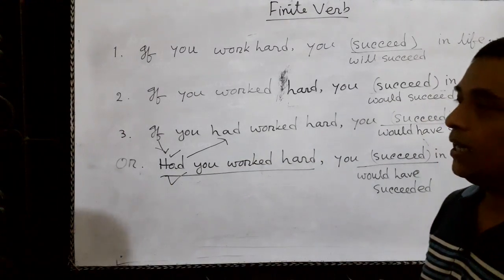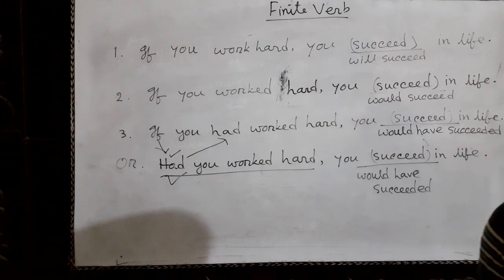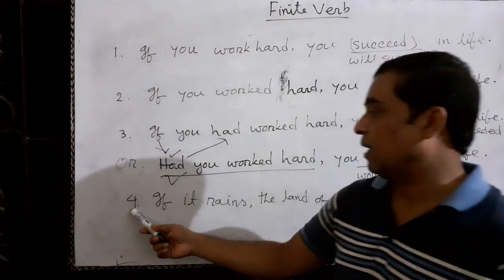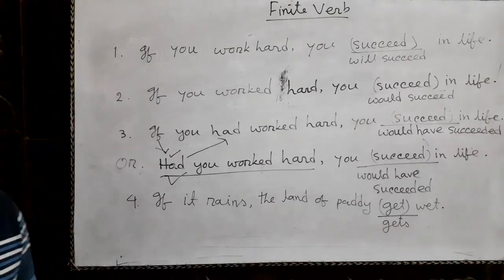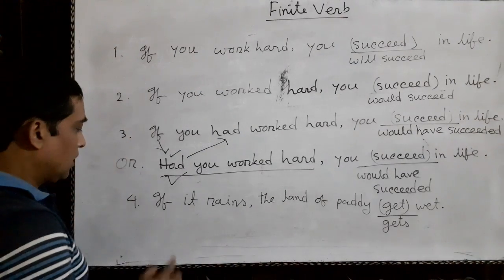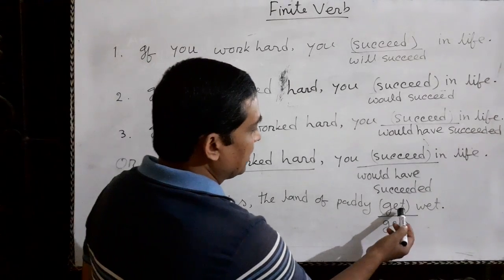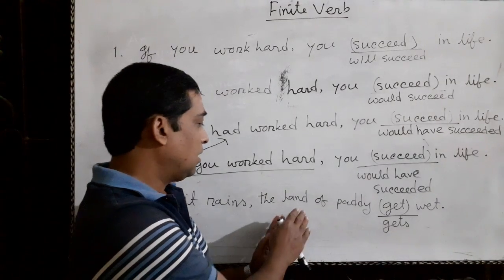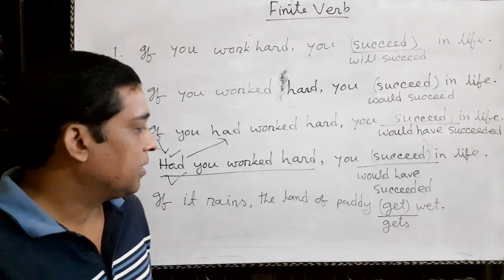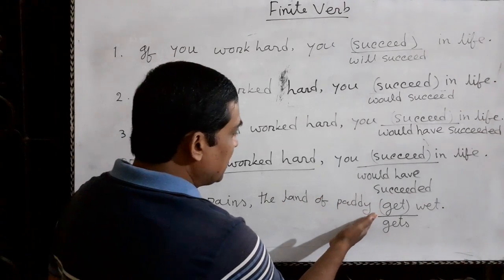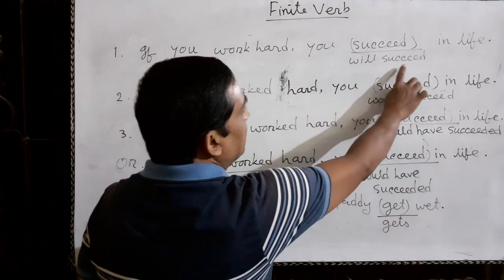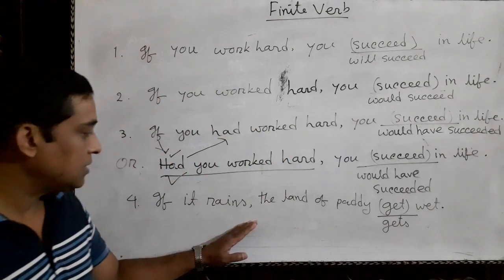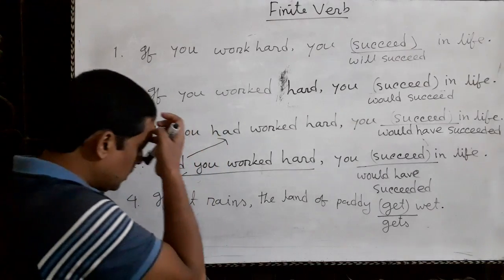We also have another type: the zero conditional. Example number four is a zero conditional sentence: 'If it rains, the land gets wet.' This describes a universal truth — the land is always wet in the rain. Because it is a universal truth, we cannot change the clause into future indefinite tense.